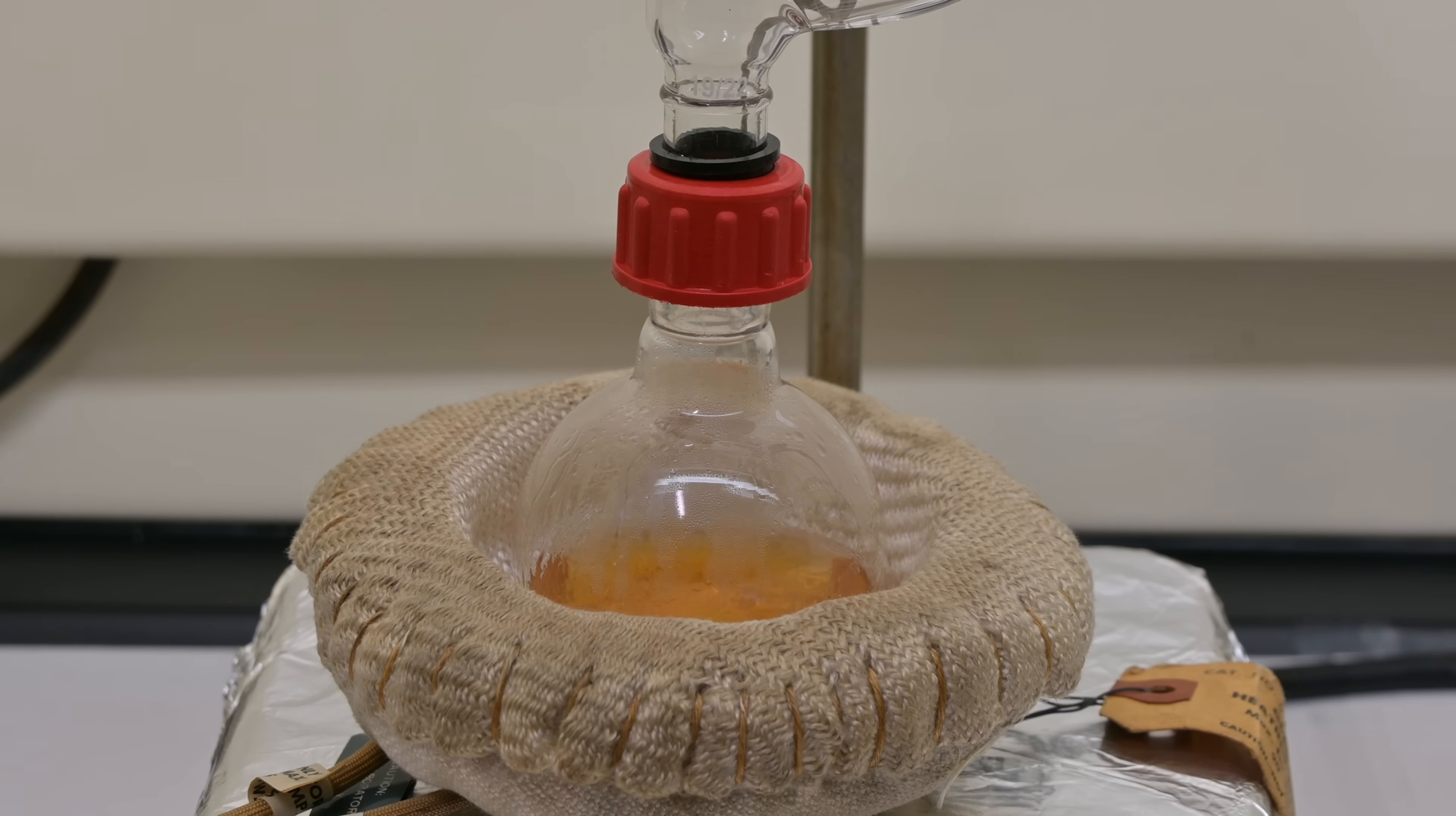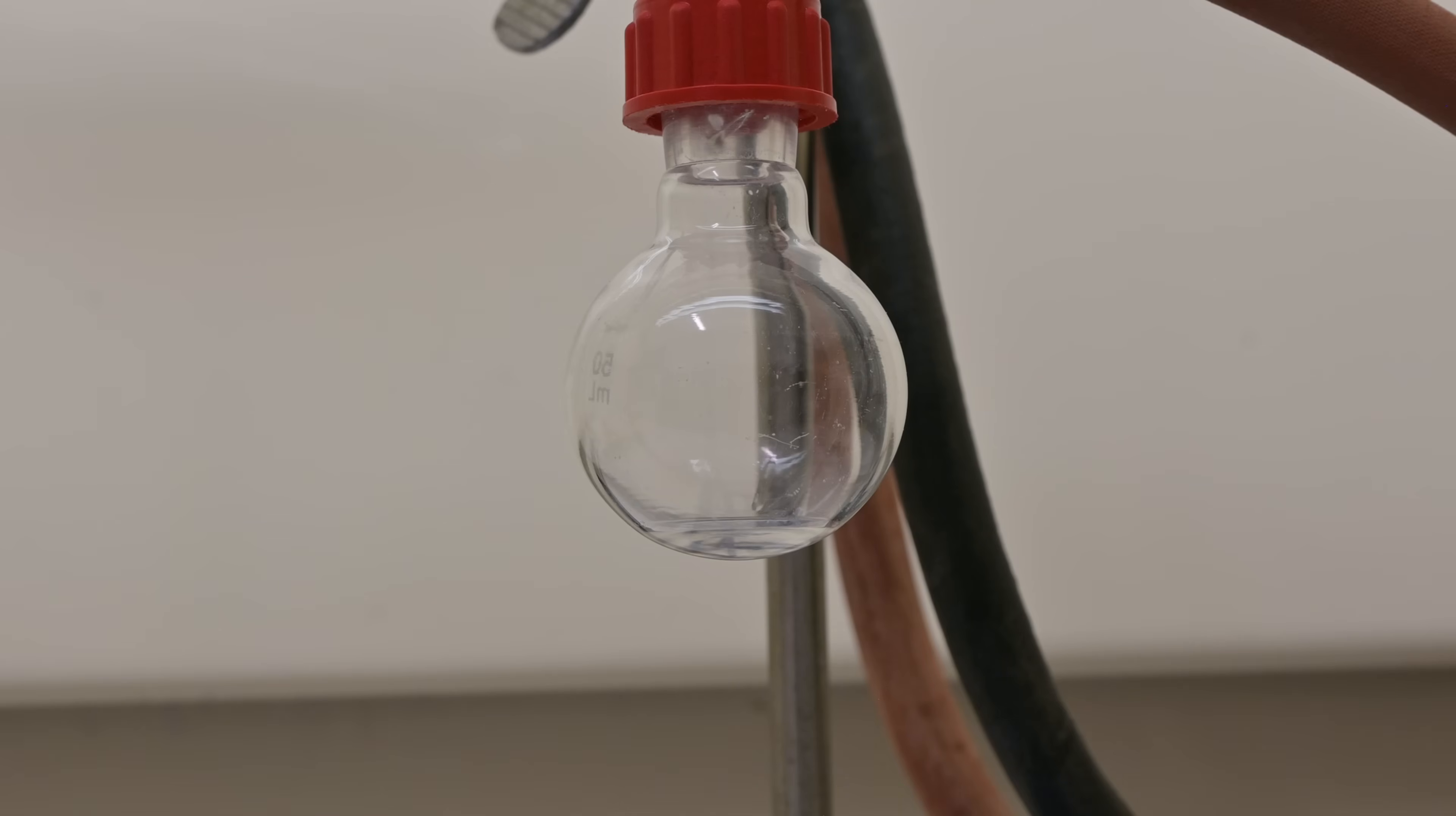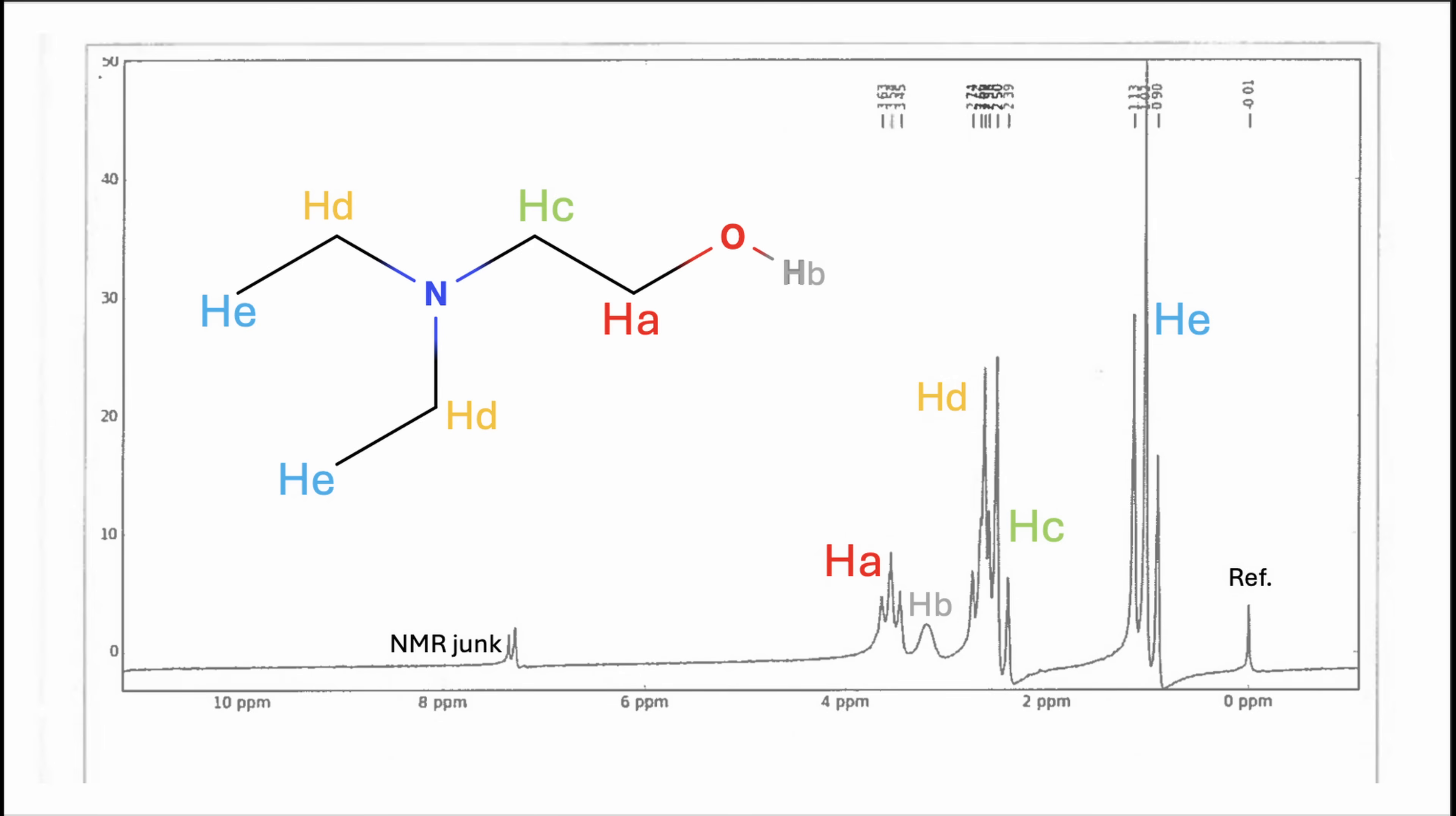At first a low boiling point material comes over, and then once the temperature began to rise, I switched out the flask and began collecting our product. This continued for some time until distillation stopped. At this point, I allowed the distillation apparatus to cool and shut off the vacuum pump. After all is said and done, I isolated about 24.6 grams of purified diethylamino ethyl alcohol, which was confirmed via NMR.